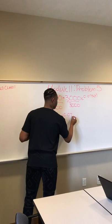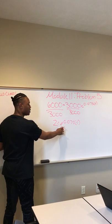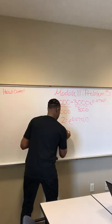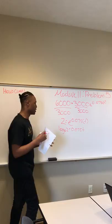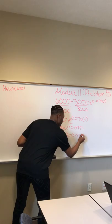Now to get rid of the e, we're going to take the log of each side. So this would be log base e of 2 equals 0.075 times T. And if you remember, log base e is just the natural log. So then it converts to ln(2) equals 0.075T.